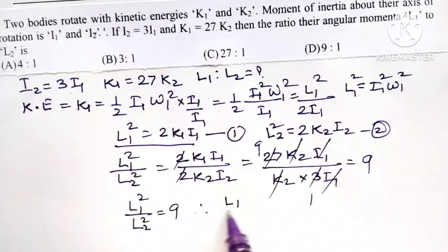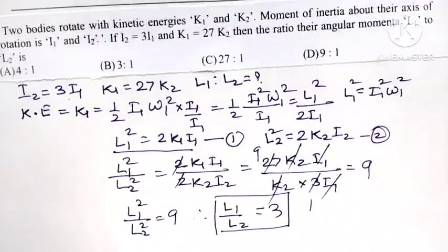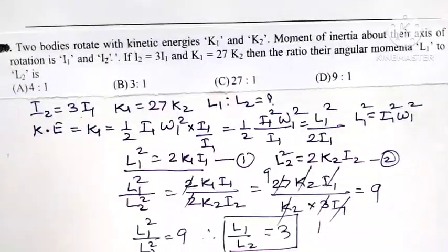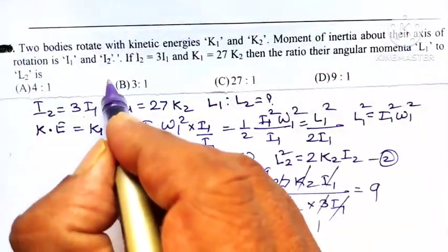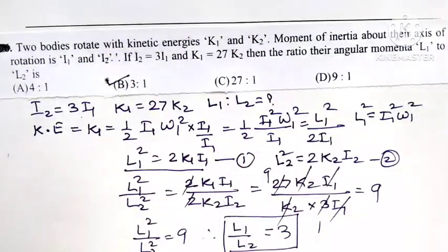Therefore, naturally, L1 upon L2 equals 3. Square root of 9 is 3. So this ratio is 3 as to 1. Out of 4 options, option B is the correct option, that L1 by L2 equals 3 as to 1.